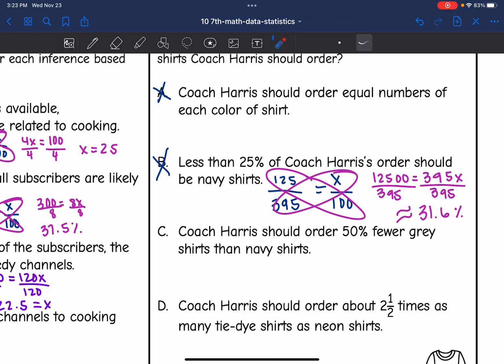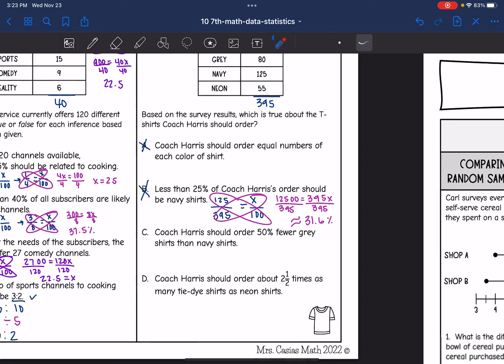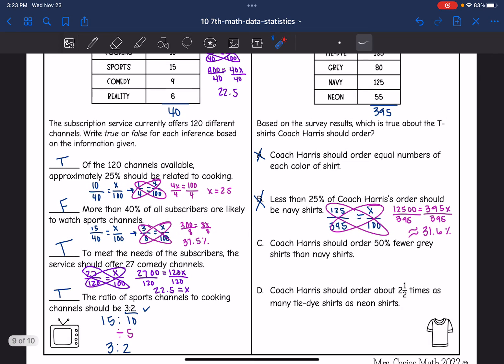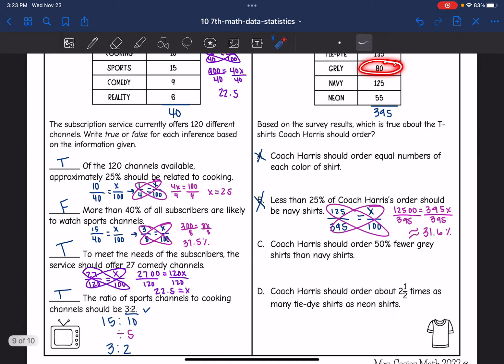Then C says Coach Harris should order 50% fewer gray shirts than navy shirts. So gray was 80 and navy was 125. So 50% of 125 would be like 63 and the gray is going to be more than that. So that's not true either.